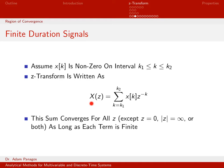In that case, our Z-transform simplifies. Instead of summing from minus infinity to infinity, we only have to sum over the potentially non-zero parts. Our lower limit starts at K1 and our upper limit is K2, because outside of that range X of K is zero. All we've done is exclude the zeros from this infinite summation.